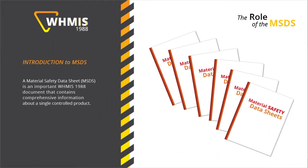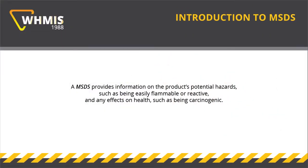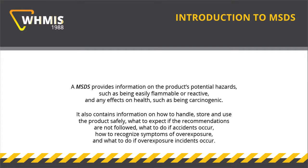A Material Safety Data Sheet contains information about a single controlled product. It provides information on the product's potential hazards, such as being easily flammable or reactive, and any effects on health, such as being carcinogenic. It also contains information on how to handle, store, and use the product safely, what to expect if the recommendations are not followed, what to do if accidents occur, how to recognize symptoms of overexposure, and what to do if overexposure incidents occur.